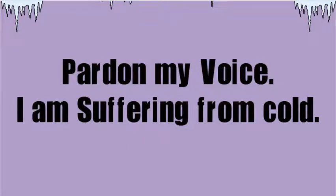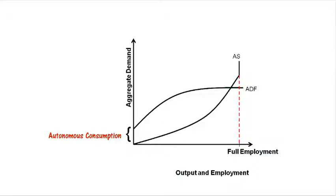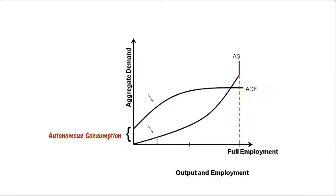Now let us see how equilibrium is formed between the aggregate demand function and aggregate supply function. Notice some point on the x-axis over here. At this level of employment and output in the economy, the total demand for goods and services is here, and the total supply for goods and services is over here — in other words, the amount of revenue that the entrepreneurs expect at maximum is over here. You can see that the demand in the economy is very high, which will prompt the entrepreneurs to produce higher by employing more people, causing a rise in employment. This will continue till the point where total demand and total supply for goods and services will be the same.